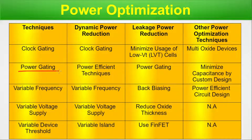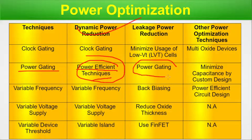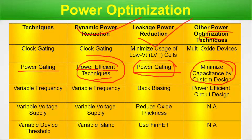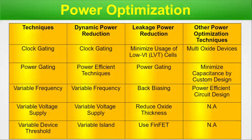For power gating: it is used as a power-efficient technique for dynamic power reduction. Power gating itself is also used for leakage power reduction. For other power optimization, we minimize capacitance by custom design. We have a full episode on custom and semi-custom design methodology in VLSI — the link is in the description.